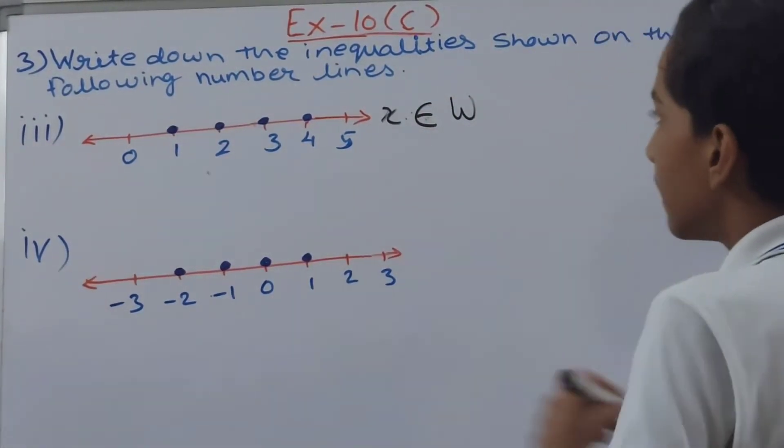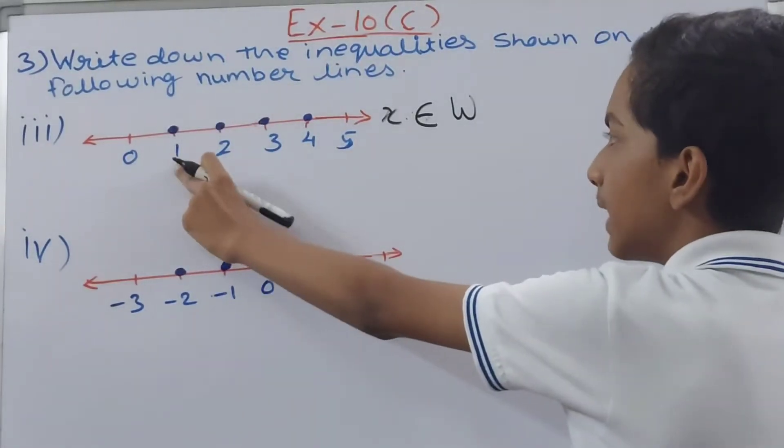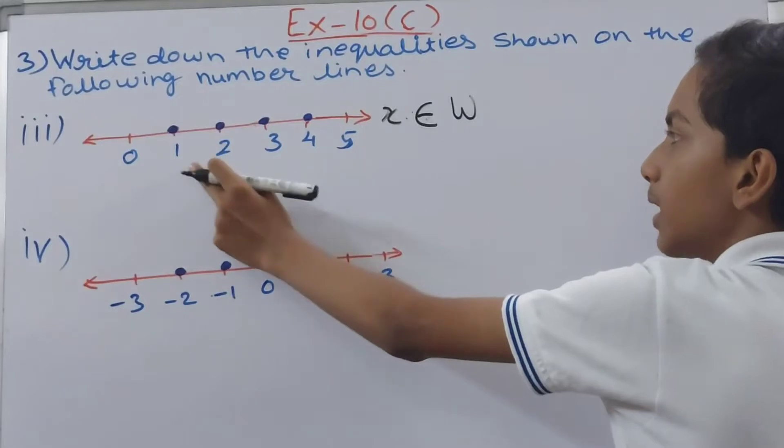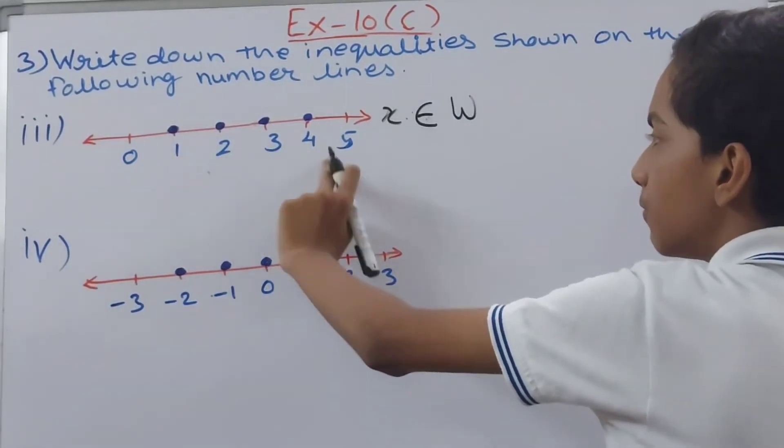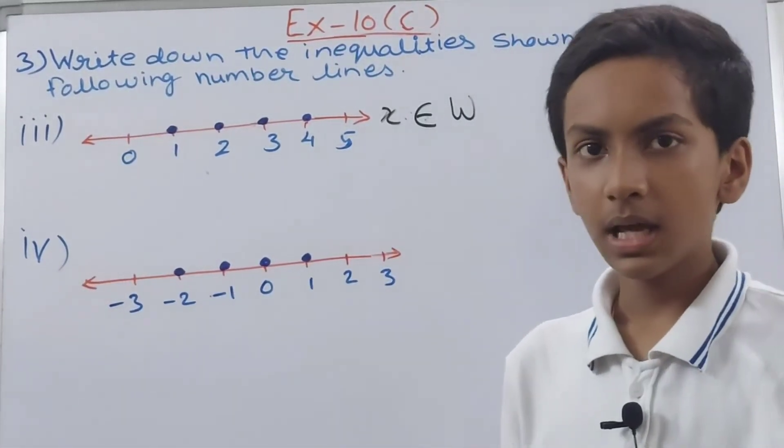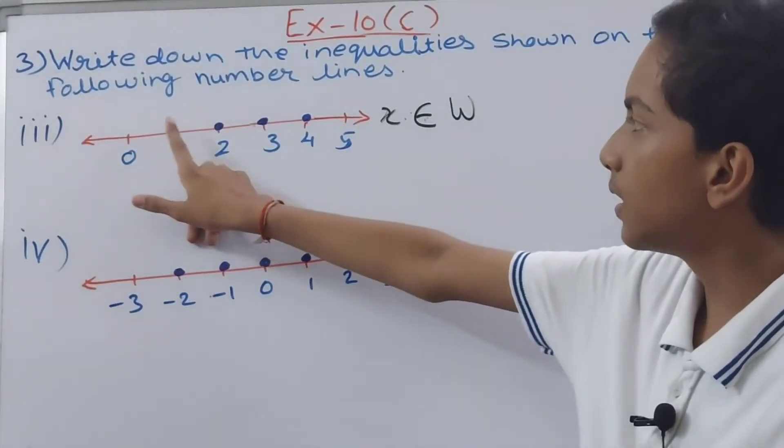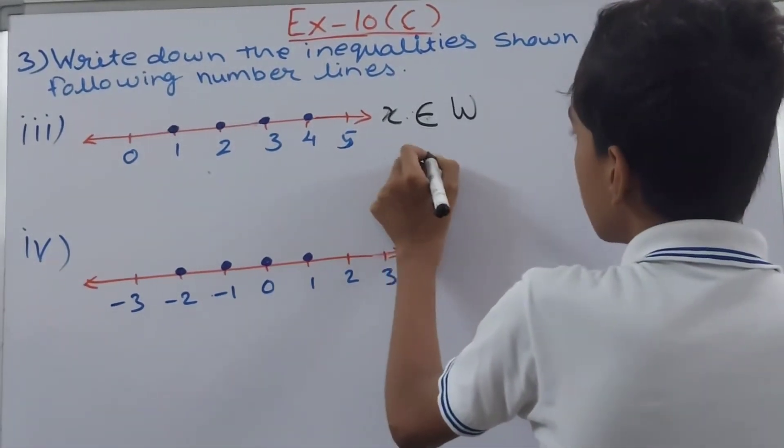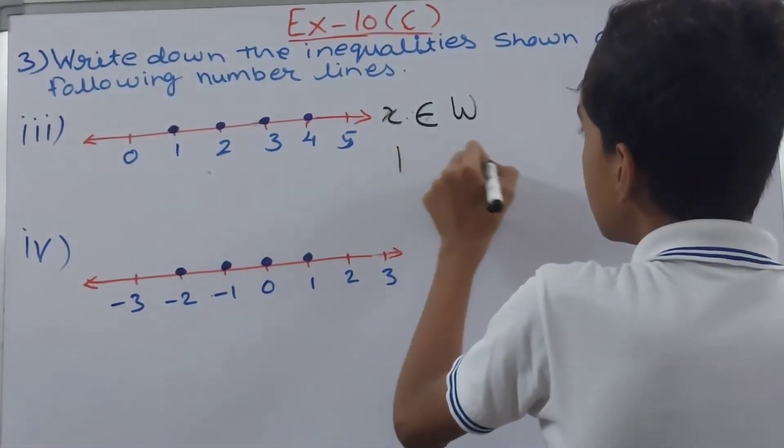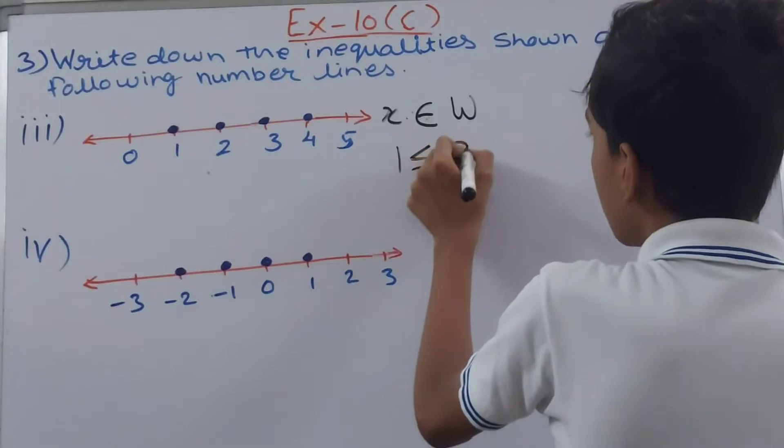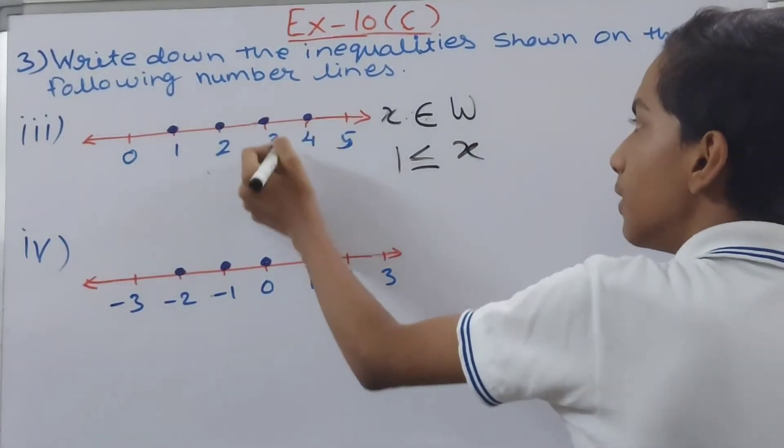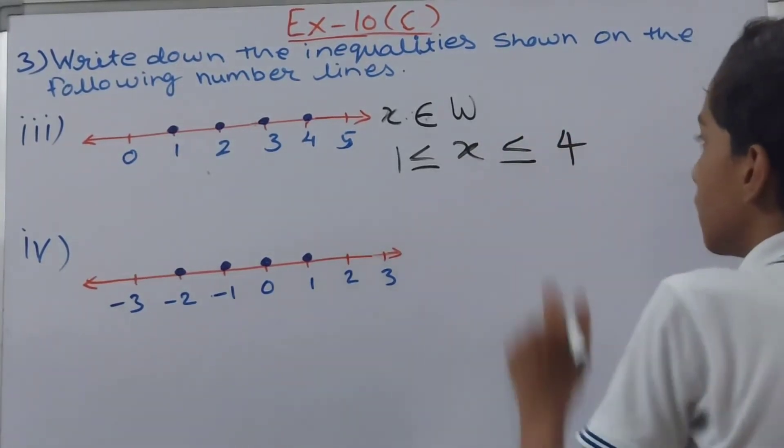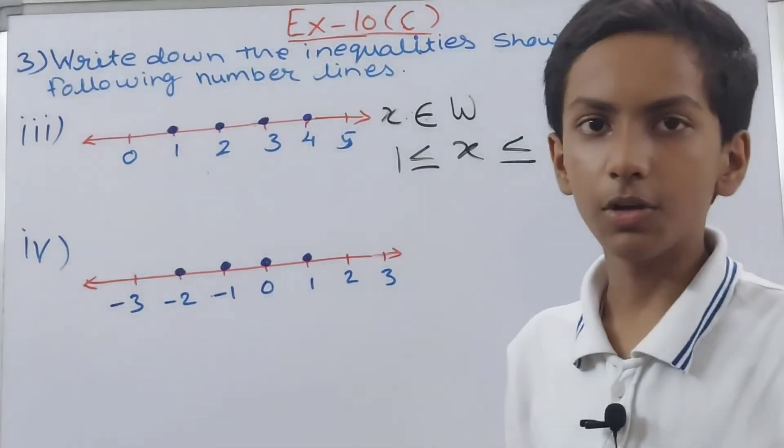And the inequality will be: see the value of x has to be more than 1 or equal to 1. Here you see numbers after 1 which are shaded are 2, 3, 4, these are having values of x more than 1, and also 1 is colored over here. So that means value of x has to be 1 or more than 1. So we write here 1 is less than or equal to x, and x is less than or equal to 4. Just that simple. So this is how we have written the third inequality.